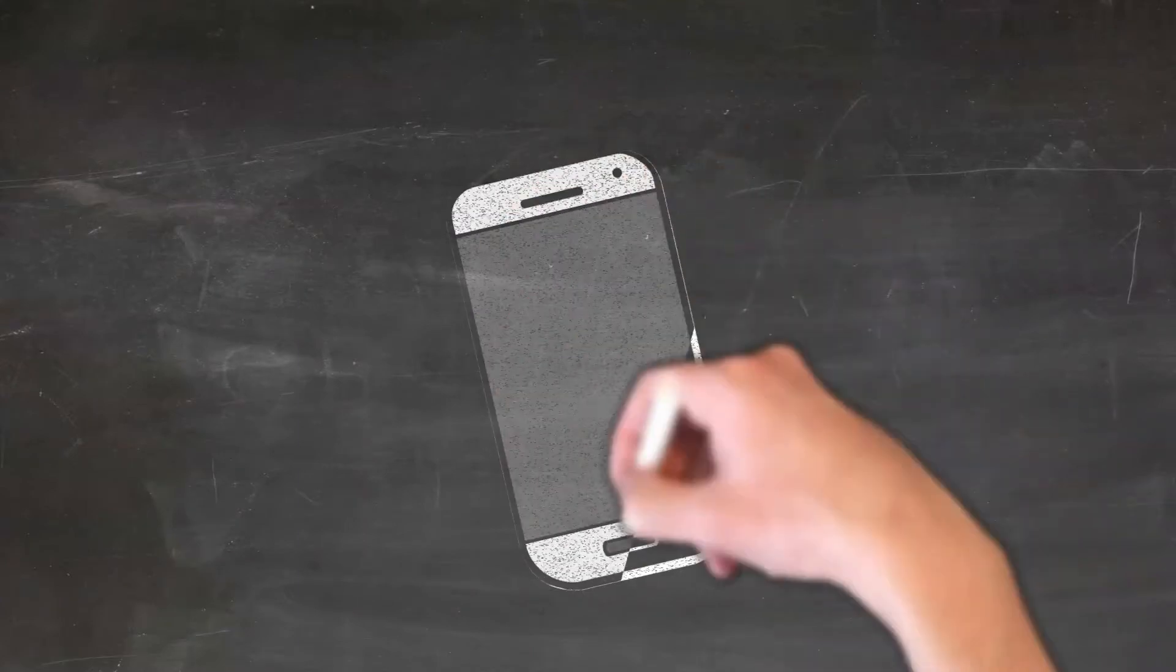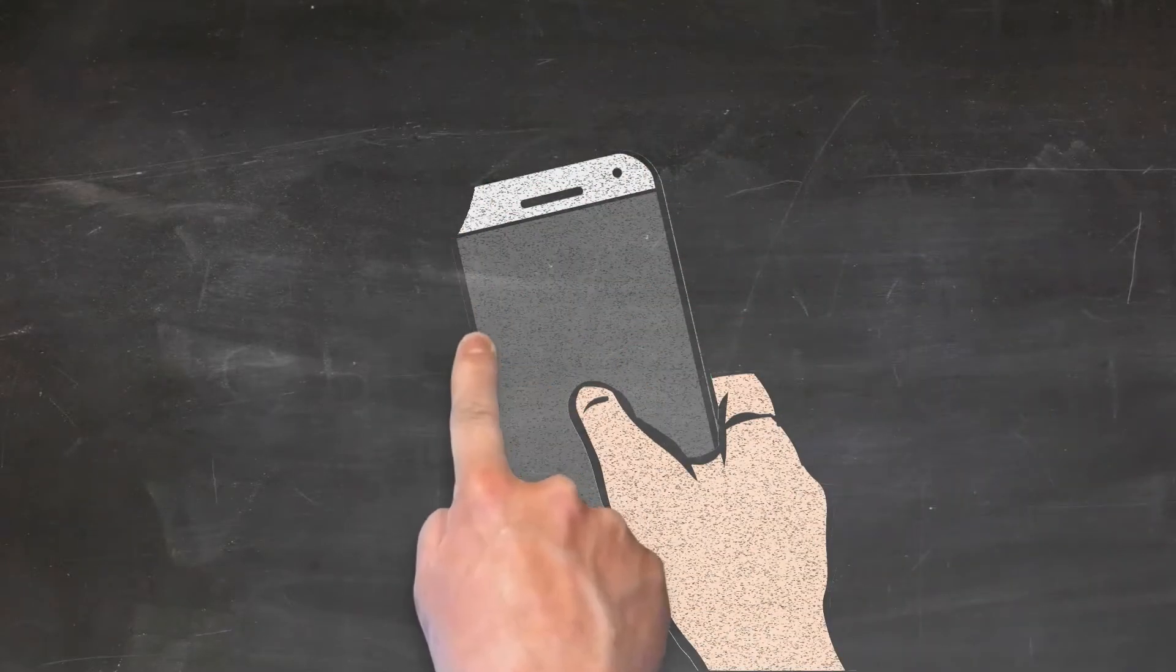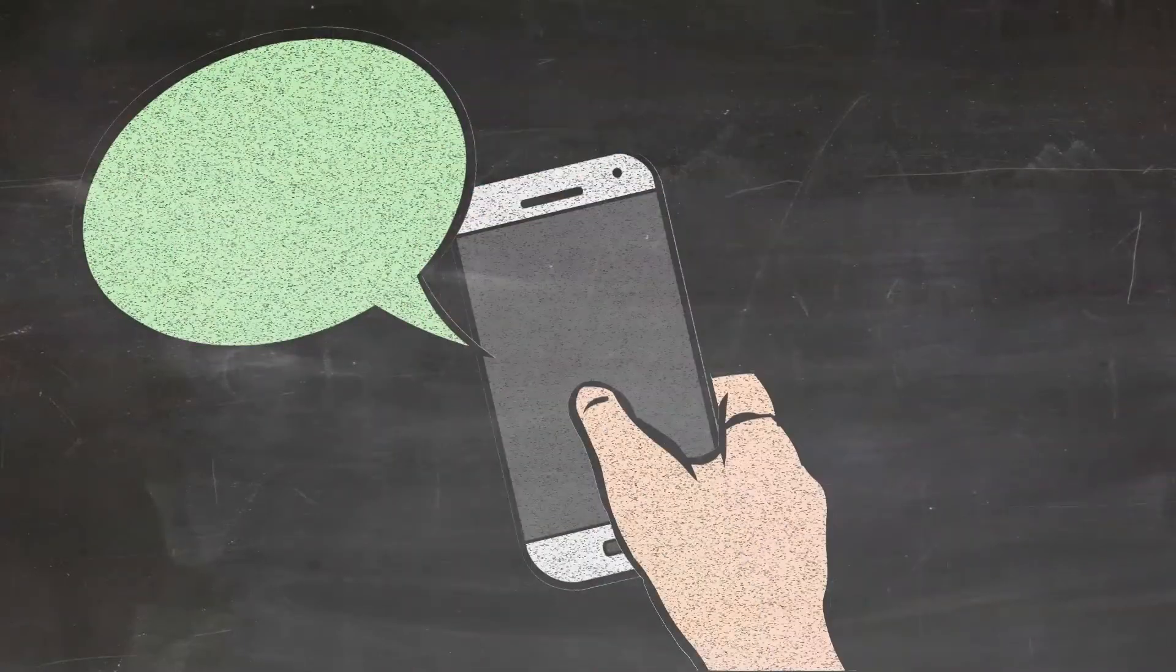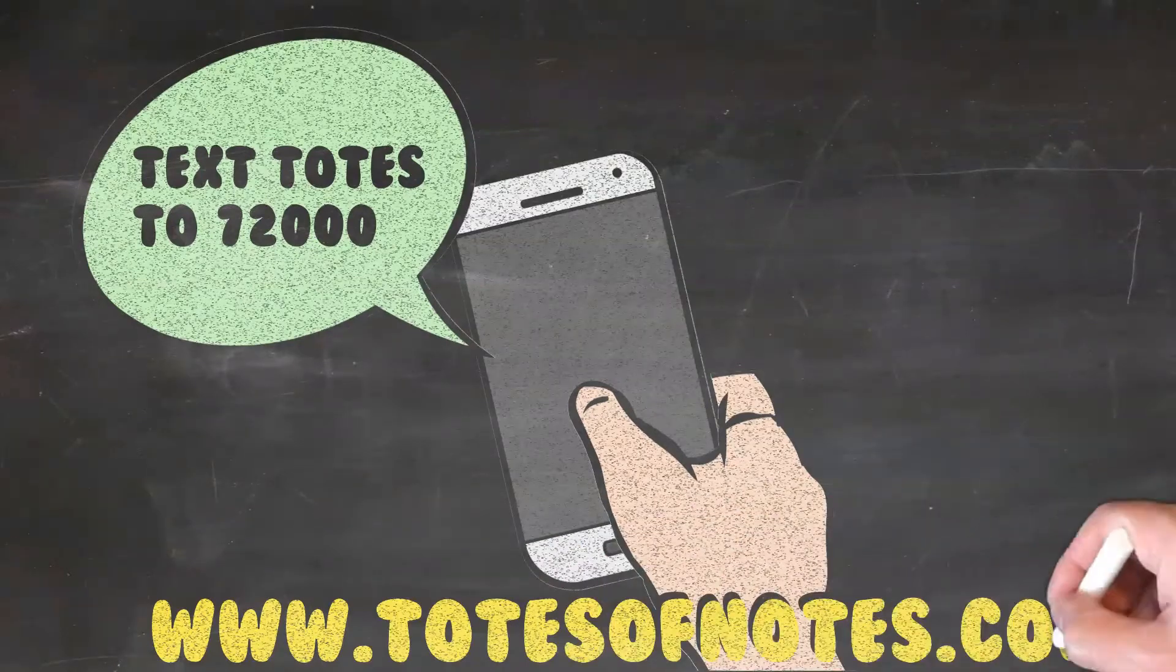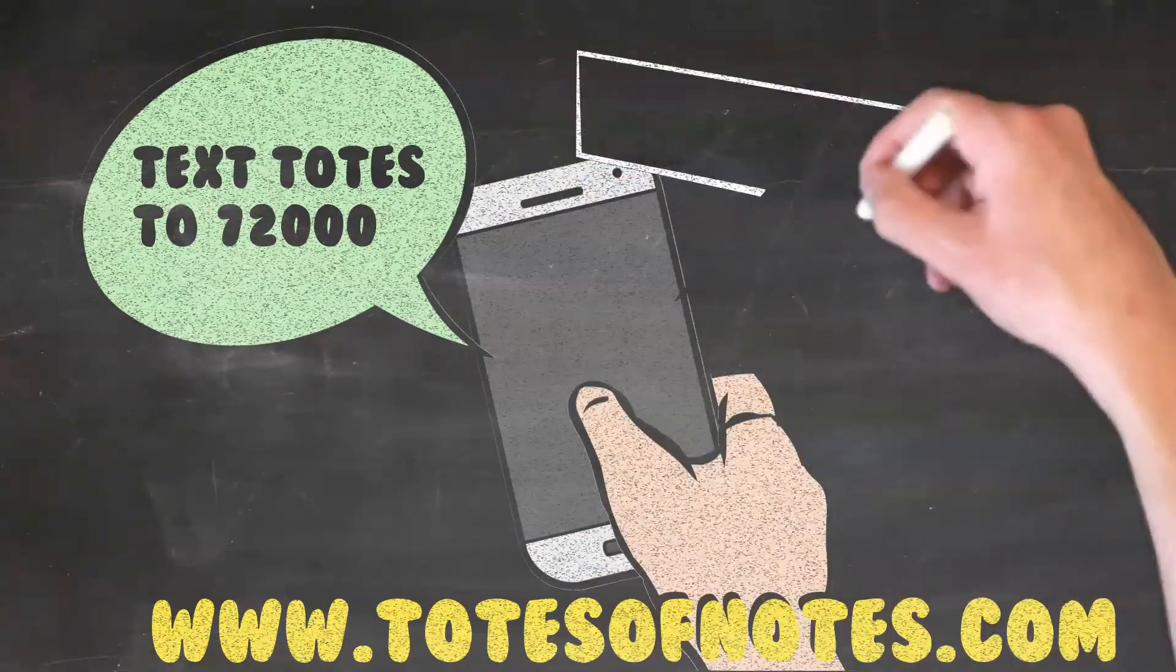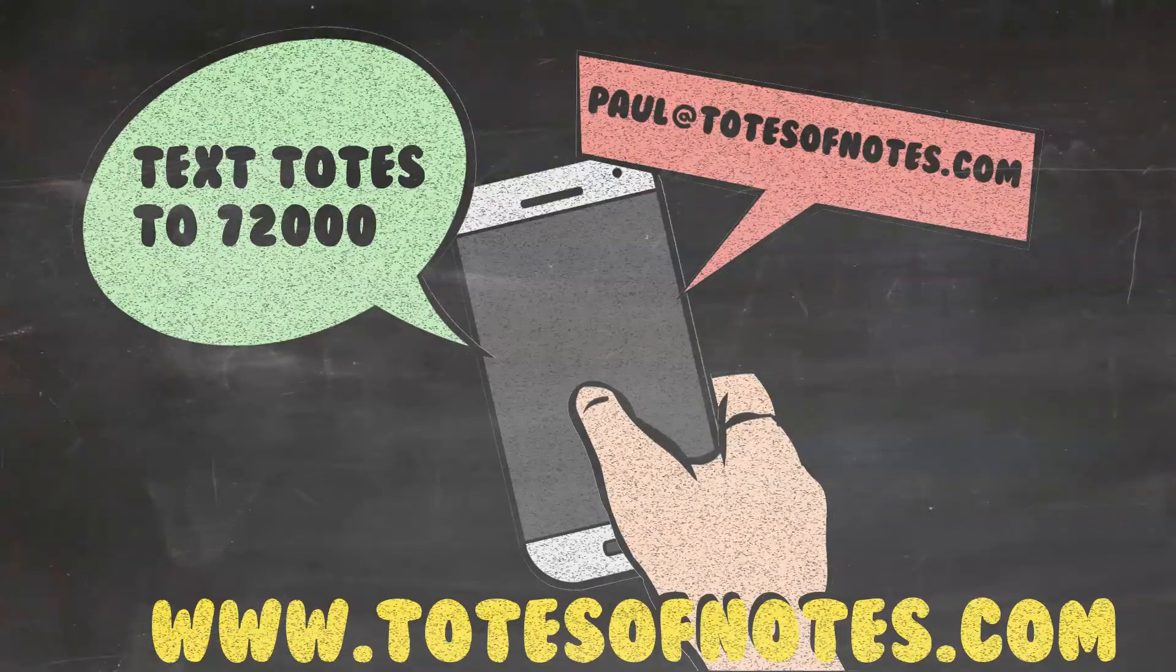I'm Paul Cooper and I'm the manager of Totes and Notes. I'd like to thank you for your time for watching our short video. If you'd like to learn more about note investing or what we do, please text the word TOTES to 72000. You can also go to our website at www.totesofnotes.com and you can also reach me at my email, Paul at totesofnotes.com.